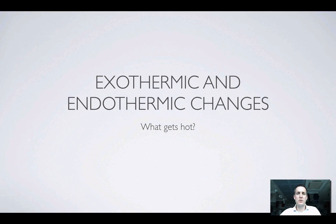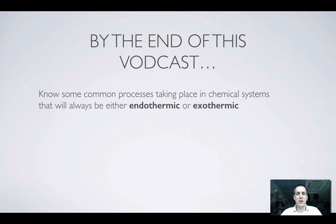Hello and welcome to what is, I suppose, a bonus film in this series about energy and rates. This one's been made in response to some questions that came up from the first film, mainly from people who want to know how can I tell by looking at the equation for a chemical reaction whether it's going to be endothermic or exothermic. So rather than looking at an energy level diagram and spotting whether that shows a positive or negative enthalpy change, how can I see that from a chemical equation? Hopefully by the end of this film we'll have seen some specific examples of processes which tend to be exothermic or endothermic so that we can spot these things when we see equations.